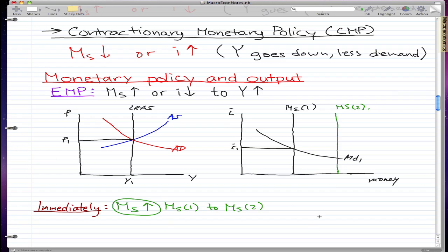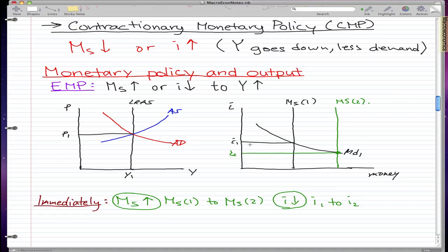But doing this, we also cause another thing to happen. We also cause interest rates to fall from i1 to i2. We can see that here in the graph by drawing the point where we intersect, and this will be our new i2. We can see already that interest rates have already fallen due to this implementation of increasing money supply.